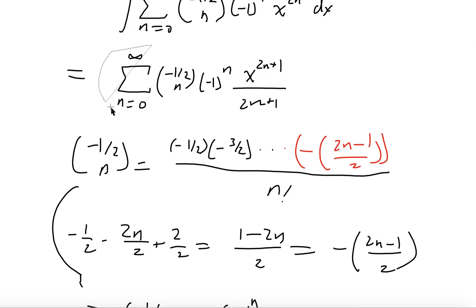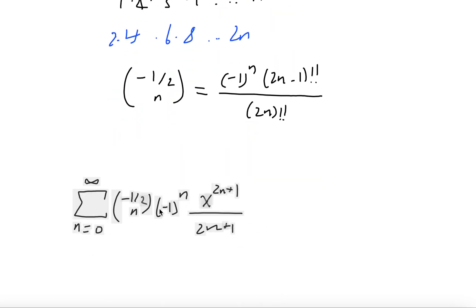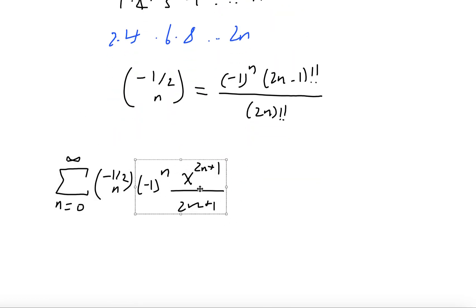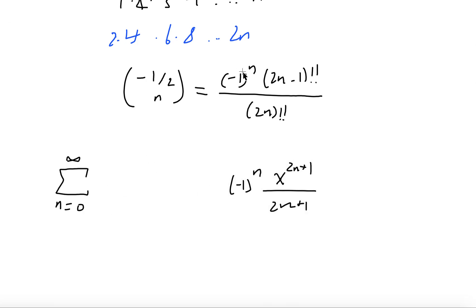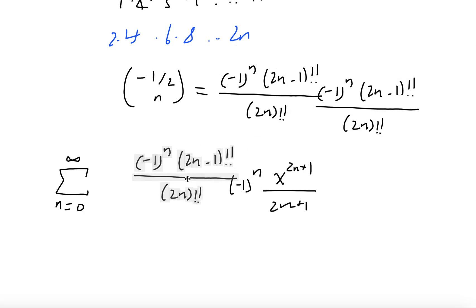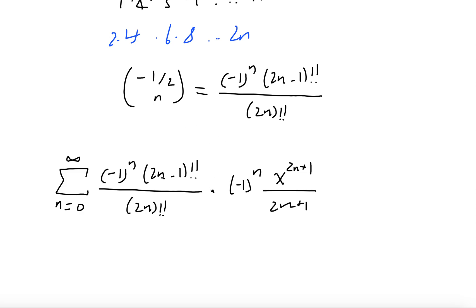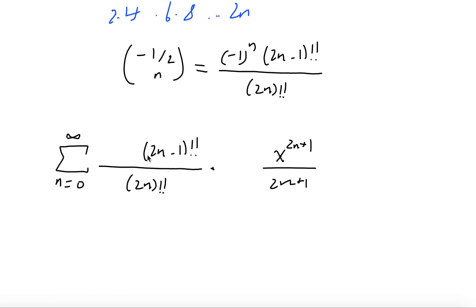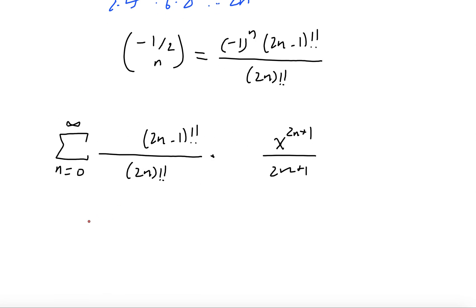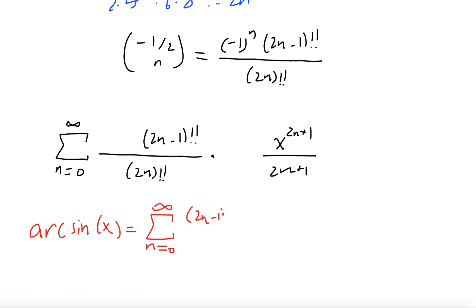Substituting back into the arcsin expression, the two (minus 1)^n factors multiply to give 1, cancelling the alternating signs. The final series for arcsin(x) is: the sum from n equals 0 to infinity of (2n−1)!! over (2n)!! times x^(2n+1) over (2n+1).